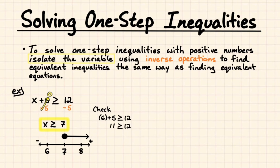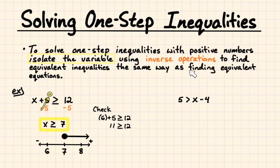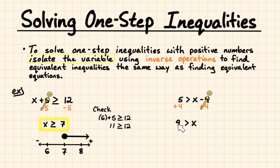Let's try another one with subtraction: 5 is greater than x minus 4. To solve this using inverse operations the same way we use equivalent equations, we're going to add 4 to both sides. So 5 plus 4 is 9, and negative 4 plus 4 goes to 0. We're left with 9 is greater than x.